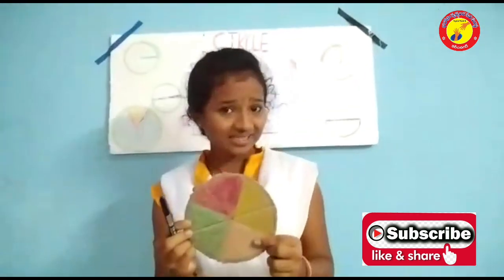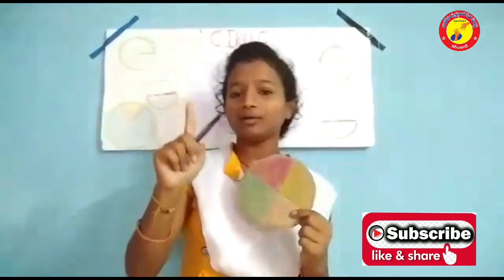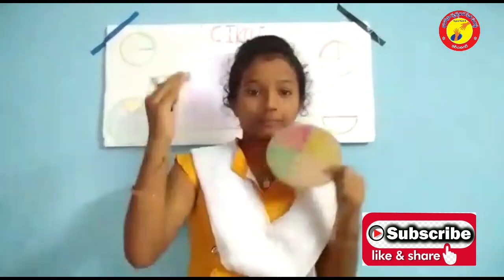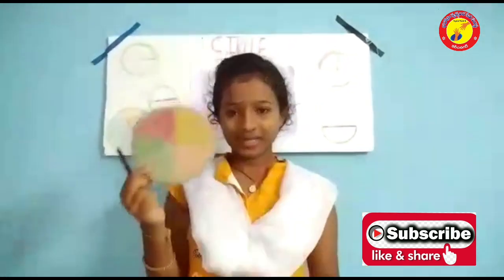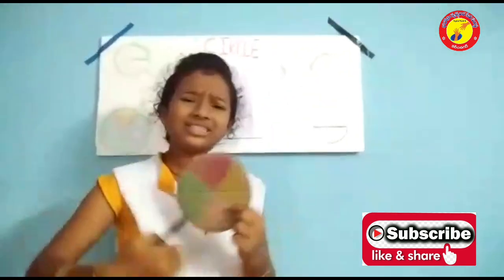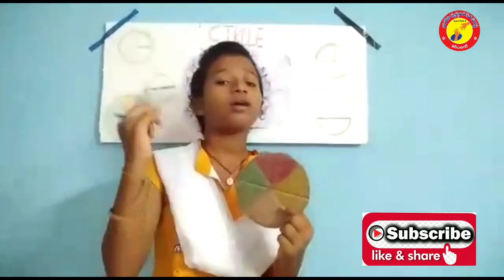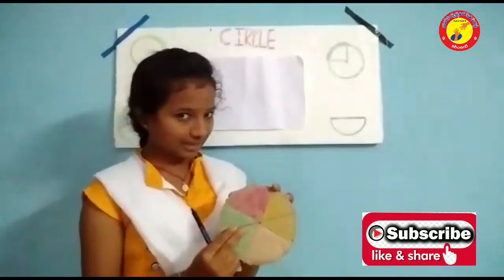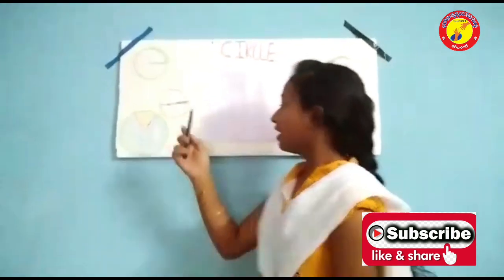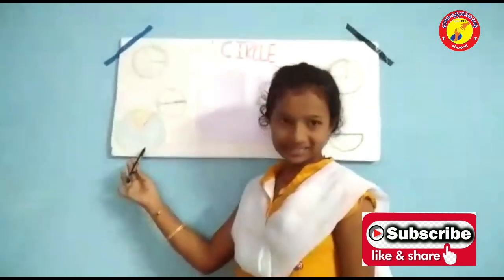The region in the circle which is bounded by 2 radii and 1 arc is known as a sector. The region in the circle which is bounded by 1 chord and 1 arc is known as a segment of a circle. A circle has two types of segments: minor segment and major segment.